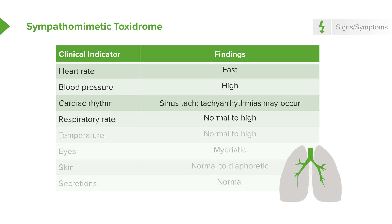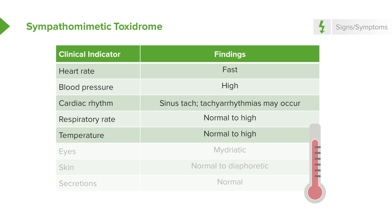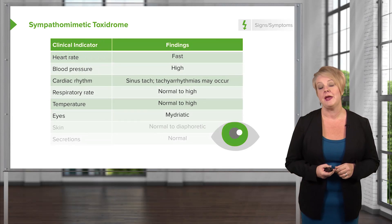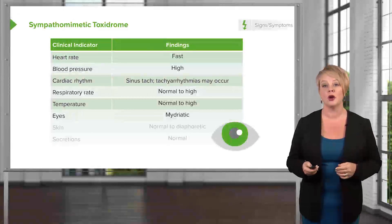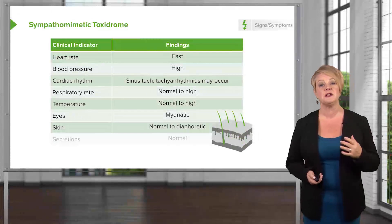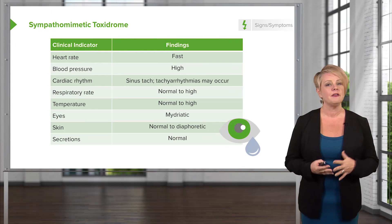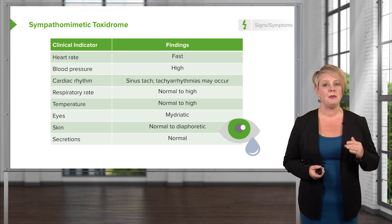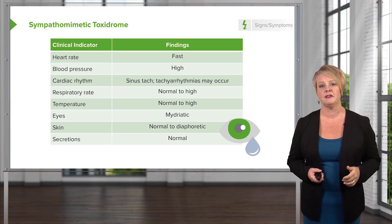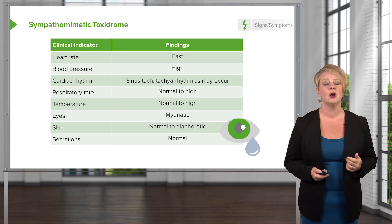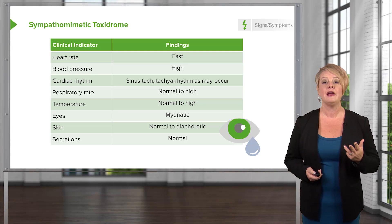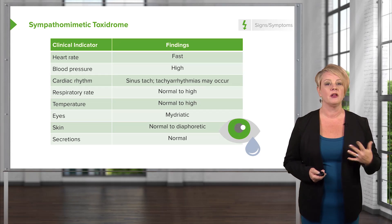Sympathomimetics don't do a whole lot to respiration, although some patients may present with tachypnea, and many will present with hyperthermia, largely due to motor activity and agitation. Pupils will be mydriatic — very large. Skin may be normal but diaphoresis is quite common, and secretions are generally normal. It's a pretty easy toxidrome: upregulation of the sympathetic nervous system, fast heart rate, high blood pressure, mydriasis, but generally not a lot of effects on skin or secretions.